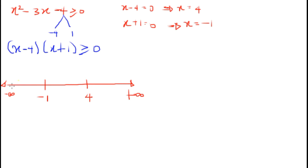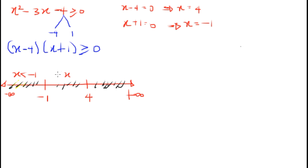This gives us three regions on the number line. The first region is x less than minus 1, because it consists of values less than minus 1. The middle region consists of values greater than minus 1 but less than 4. The third region consists of values of x greater than 4.